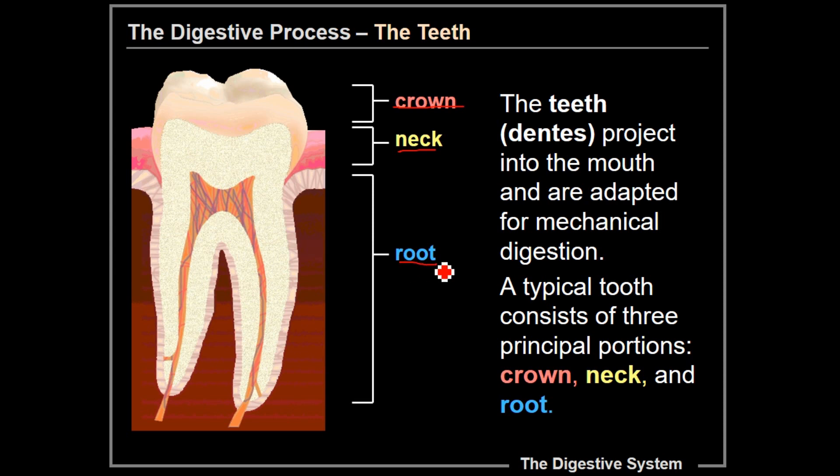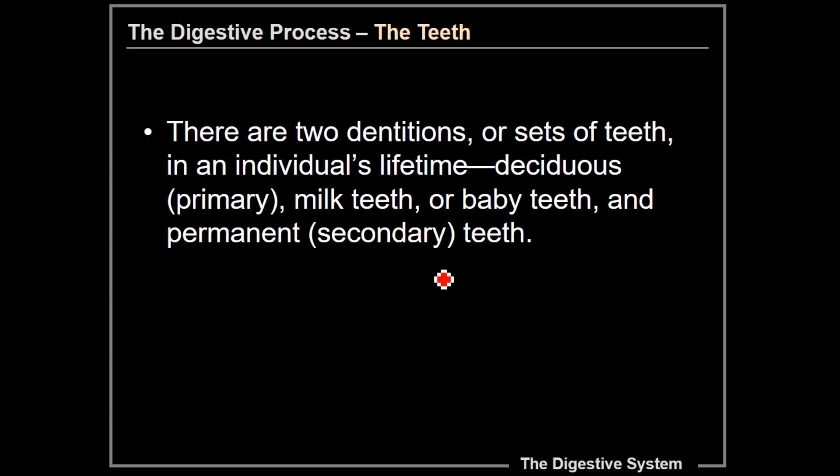By definition, the teeth — sometimes called the denties — project into the mouth and are adapted for mechanical digestion, meaning they're designed to grind up your food. A typical tooth consists of the three principal portions: the crown, the neck, and the root.